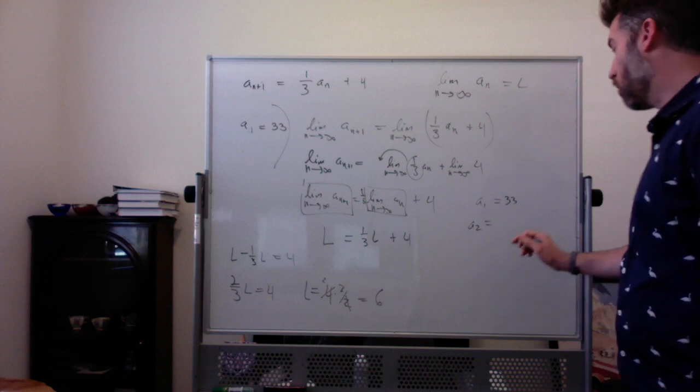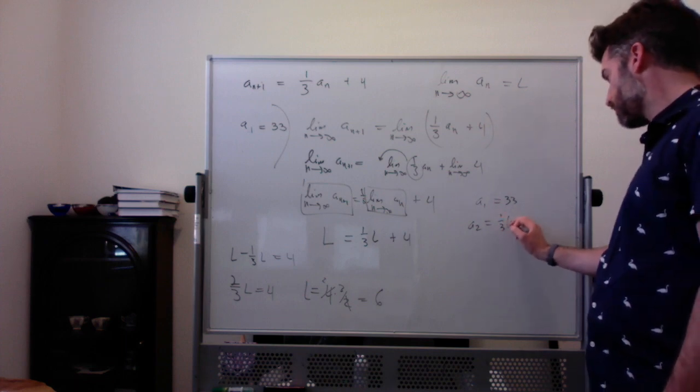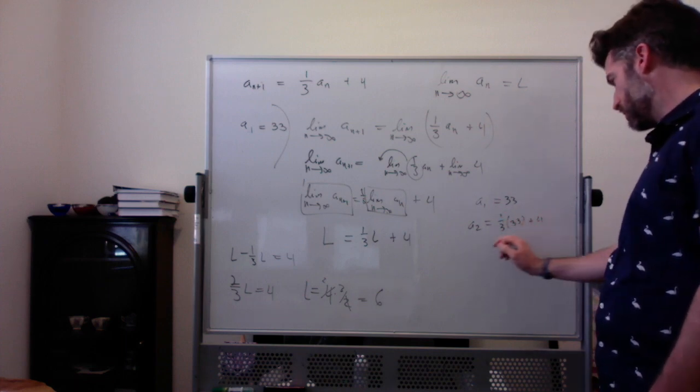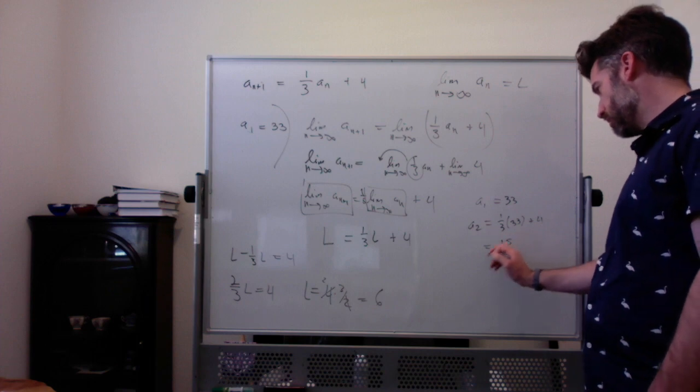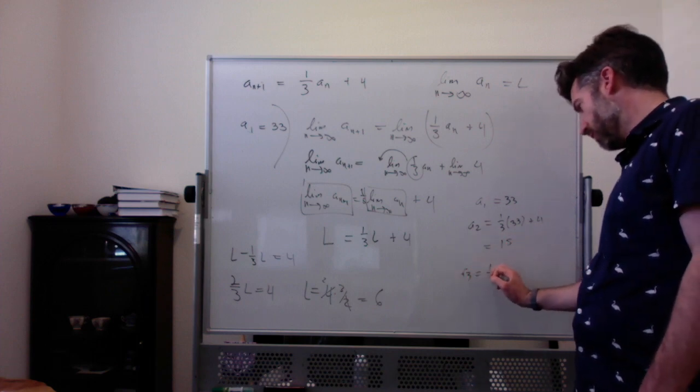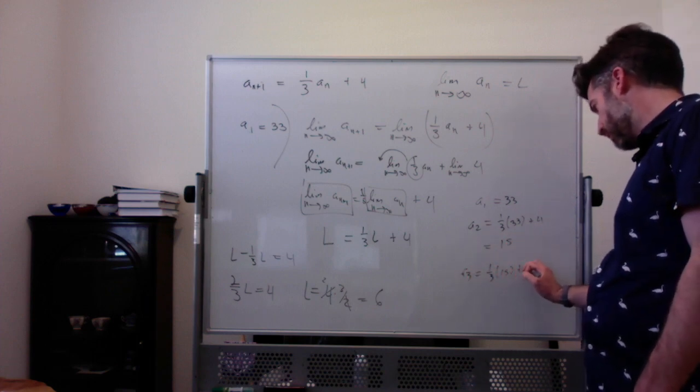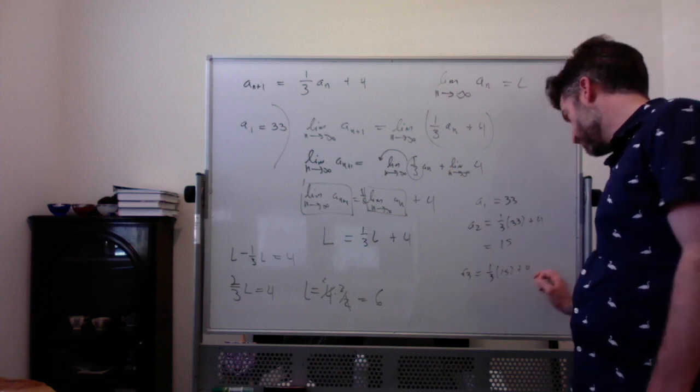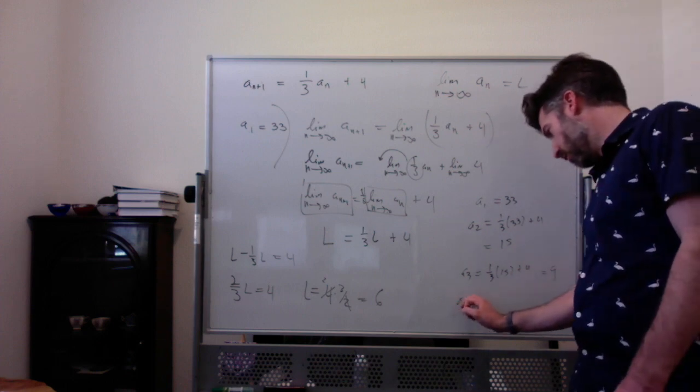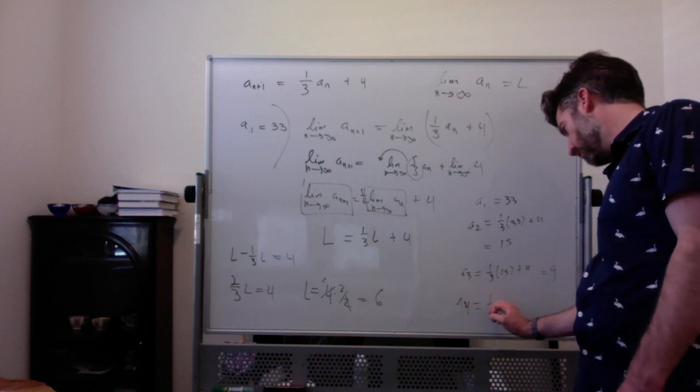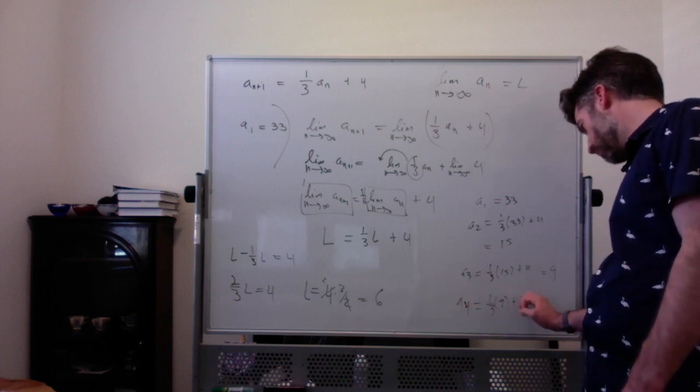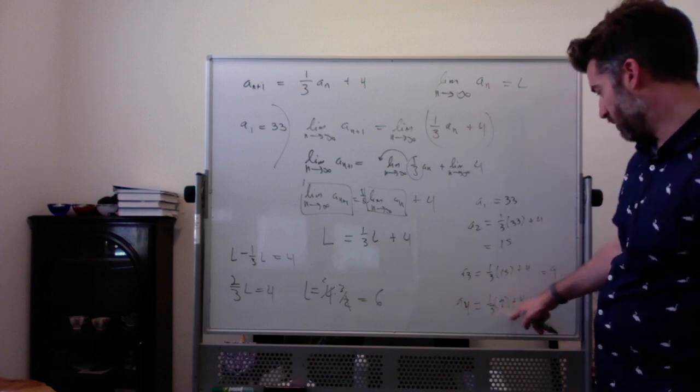A2 is 1 third of 33 plus 4, which is 11 plus 4, which is 15. A3 is 1 third of 15 plus 4, which is 5 plus 4, which is 9. A4 is 1 third of 9 plus 4, which is 3 plus 4, which is 7.